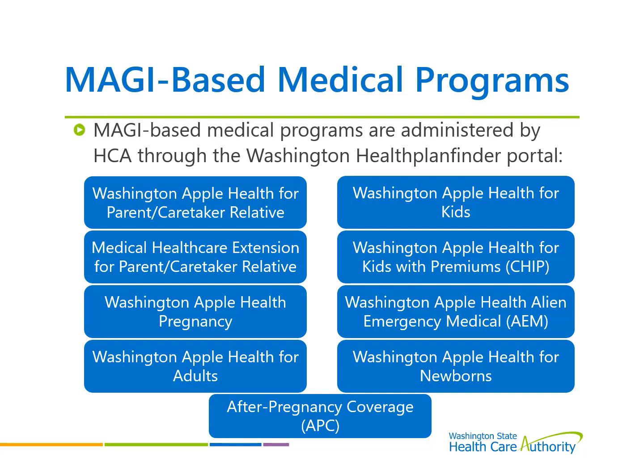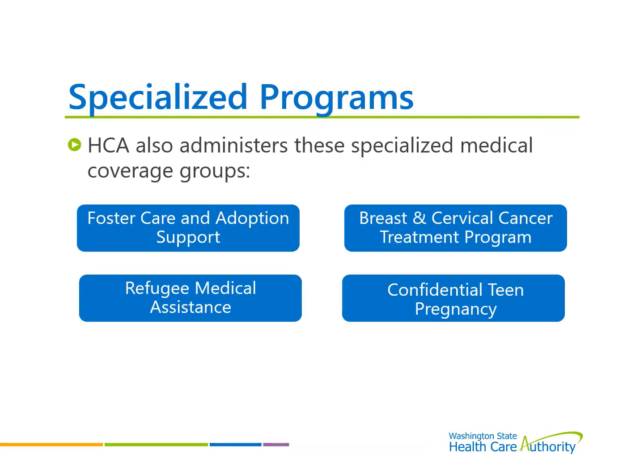Here is a list of MAGI-based medical programs: Extension for Parent, Caretaker, Relative; Washington Apple Health Pregnancy; Washington Apple Health for Adults; Washington Apple Health for Kids; Washington Apple Health for Kids with Premium, also known as CHIP; Washington Apple Health Alien Emergency Medical (AEM); Washington Apple Health for Newborns; After Pregnancy Coverage (APC). HCA also administers Specialized Medical Coverage Groups: Foster Care and Adoption Support, Breast and Cervical Cancer Treatment Program, Refugee Medical Assistance, and Confidential Teen Pregnancy.